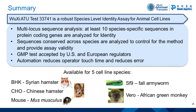In summary, WUSHI Advanced Therapies' cell line identity test is a robust species-level identity assay for animal cell lines. The test employs a multi-locus sequence analysis — at least 10 species-specific sequences in protein-coding genes are analyzed for identity. Each assay also analyzes sequences conserved across species to control for the methodology and provide assay validity. The test has been accepted by U.S. and European regulators. Automating the procedure has reduced operator touch time and human error. The cell line identity method is available for BHK, CHO, mouse, SF9, and Vero cell lines. Thank you.